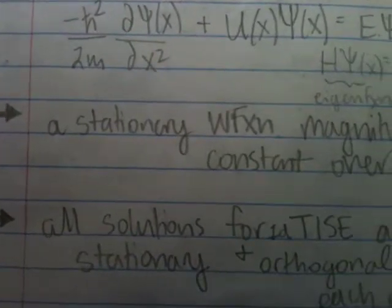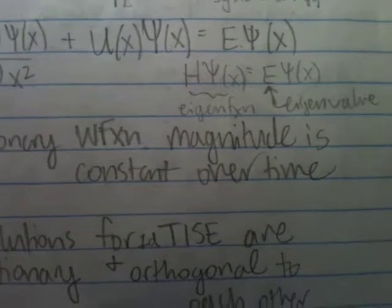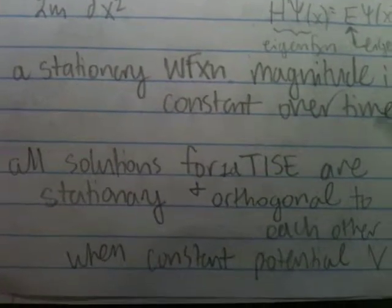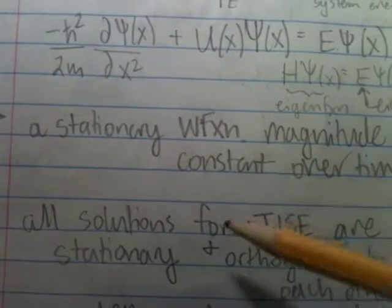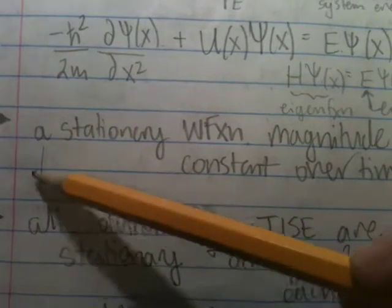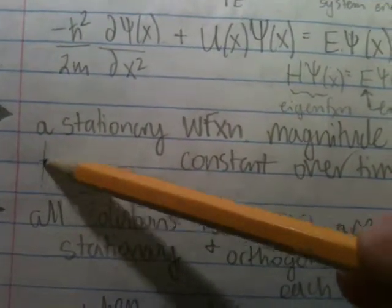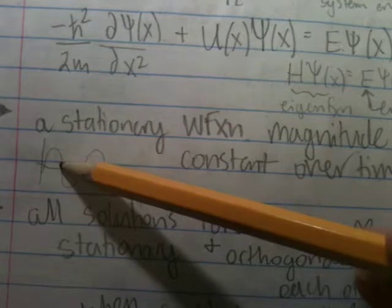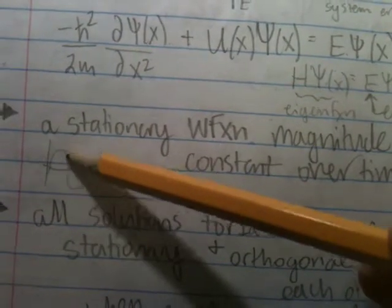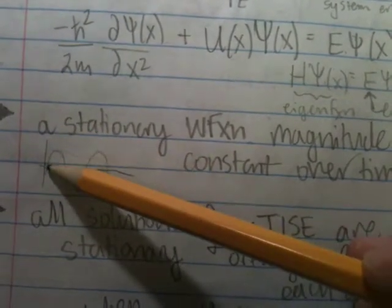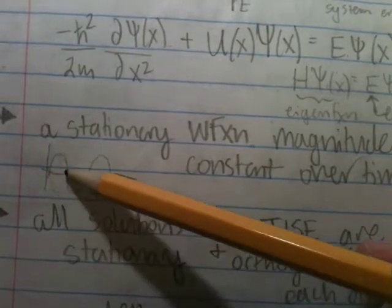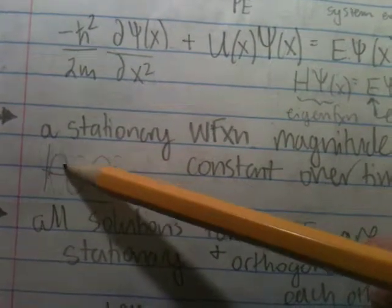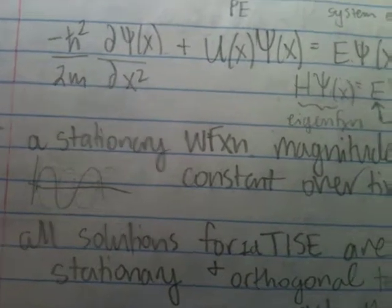More definitions. A stationary wave function is a magnitude that is constant over time. So, if there's some sort of time component, it doesn't matter because the amplitude stays constant over time. This might be the real part here, and then the imaginary part comes around here and always keeps the same magnitude.